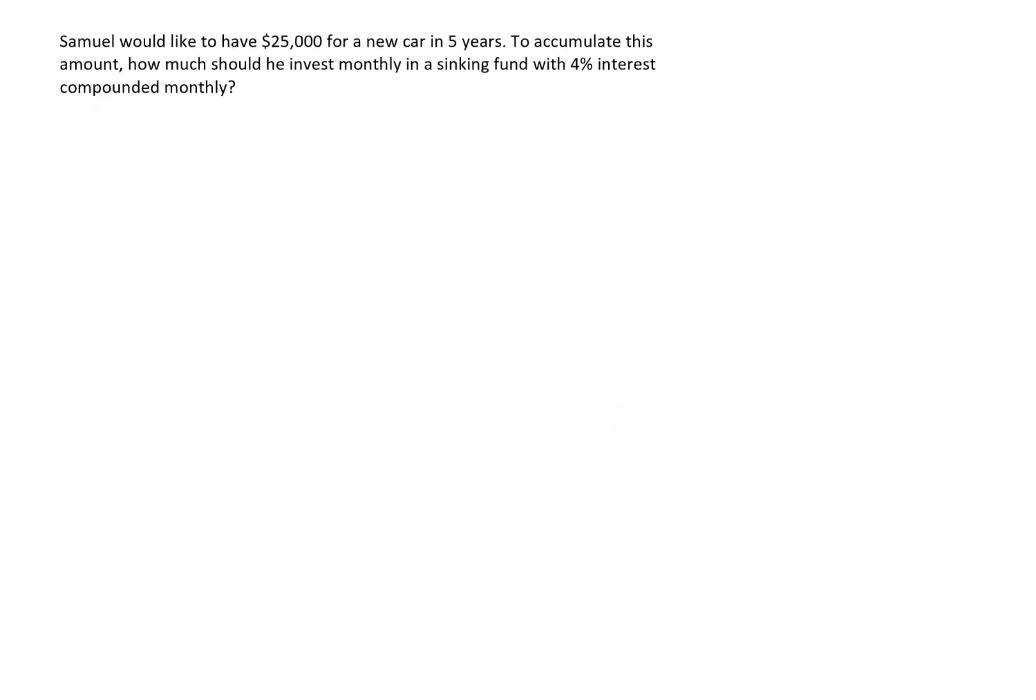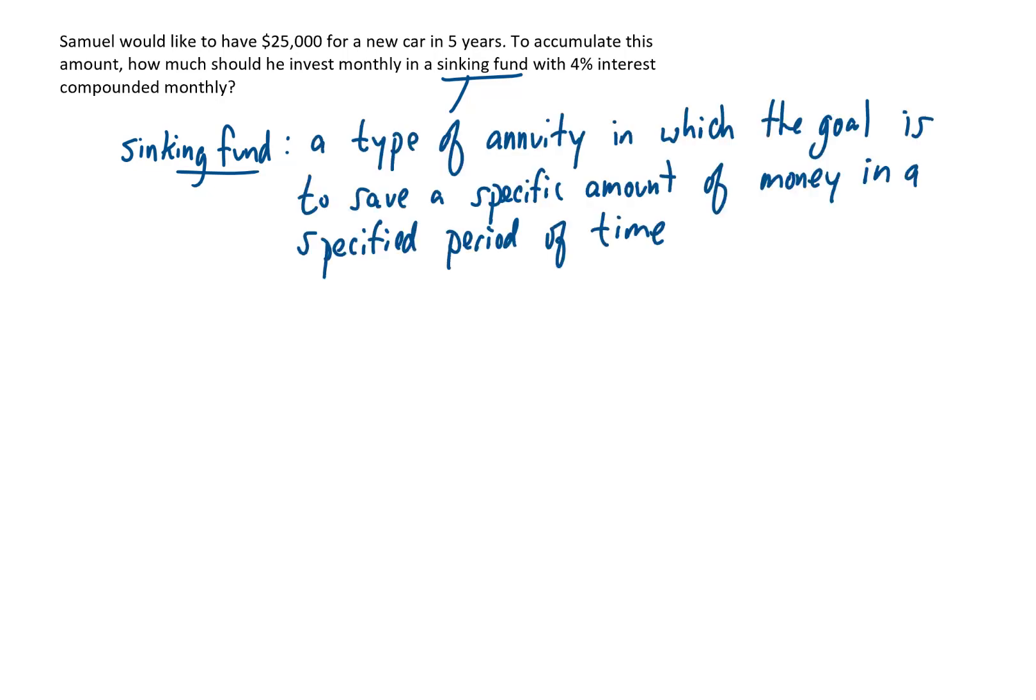Oh, now this problem involves a sinking fund. And really, this is the same thing as an annuity. It's just we're thinking about it a little bit differently. With the sinking fund, we have a goal in mind. We have some amount of money that we want to have saved by a certain date. And that's really it. The question with these problems is, how much money do you need to be putting into this annuity, say every month, in order to meet that savings goal?